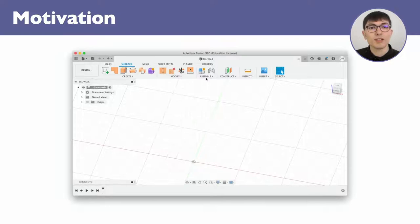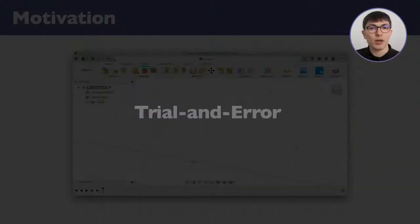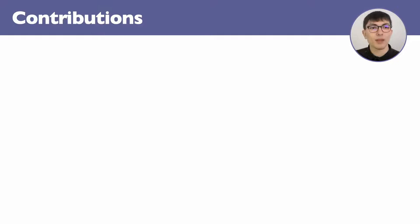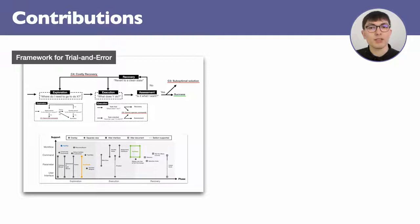The issue is that this behavior that we refer to as trial and error is poorly supported in software. In this work, we contribute a framework for trial and error, including a conceptual model and a design space to compare existing approaches and identify opportunities for future research, as well as three techniques targeted at trial and error that we implemented in Fusion 360.